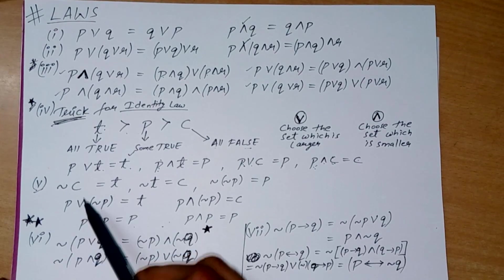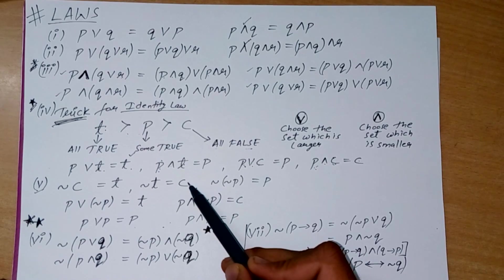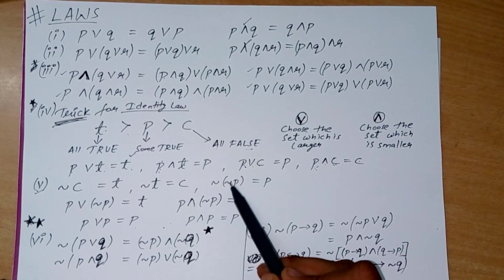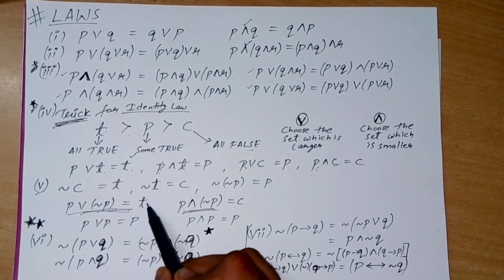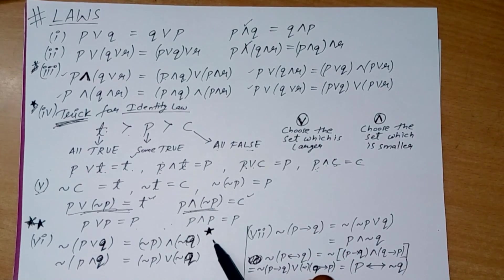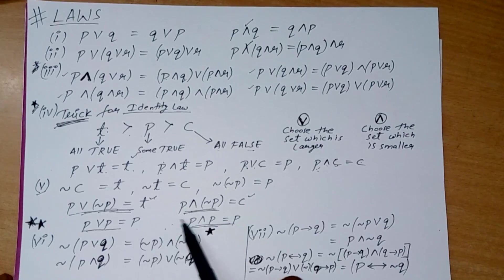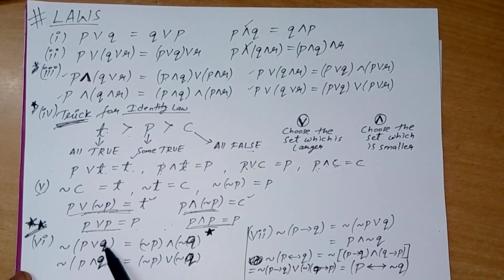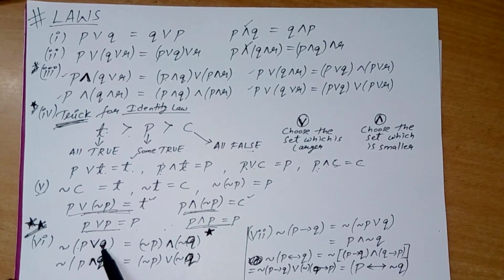Another law: negation of C (all false) gives all true, and negation of all true gives false. Double negation of P gives P again. De Morgan's law: negation of (P or Q) equals negation of P AND negation of Q — the OR symbol converts to AND, and each gets negated.